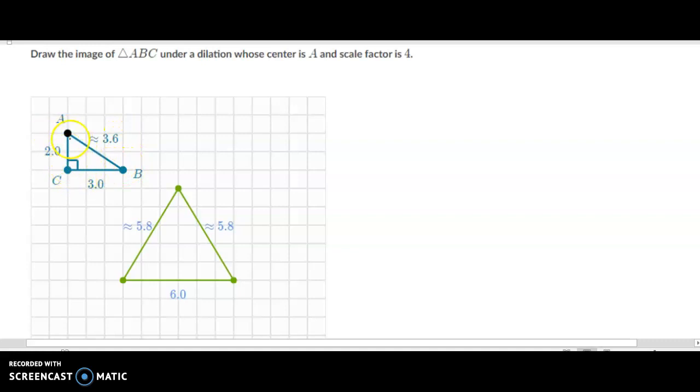To get to the new C, it's two away from A now. So two times four, which is our scale factor, we'd have to put the new C eight positions away from point A. So that would go there. B would be over here. And we'd be able to drag these points to those positions.